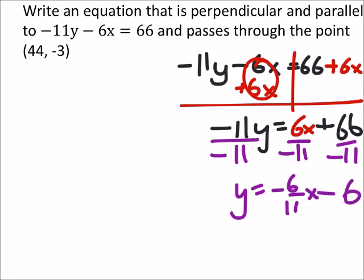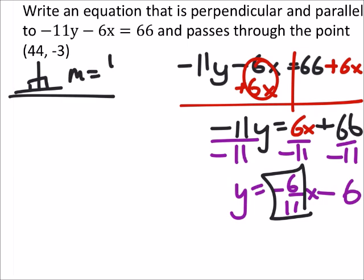So y equals negative 6 elevenths x minus 6. The minus 6 is not important because that's the original equation. What we want is just a slope. So for a perpendicular line, which we use this symbol right here, we want the slope to be the opposite reciprocal of this negative 6 elevenths, which would give us a positive. The slope will be a positive 11 sixths.